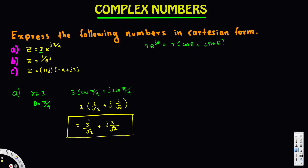Now let's look at the second part. Part b is also in polar form: z equals 1/e^j. We can also write this as e^(-j) by bringing the exponential into the numerator. Now you can see this is almost matching the Euler's identity pattern.